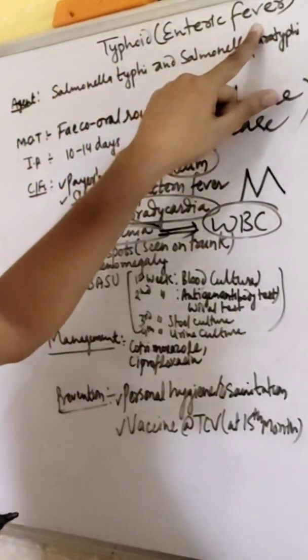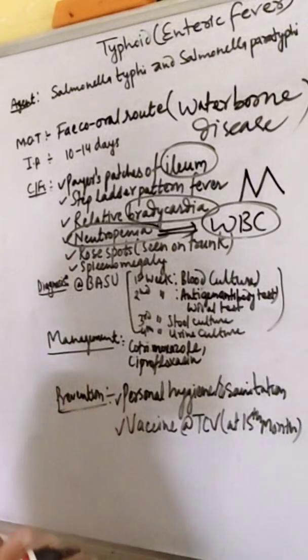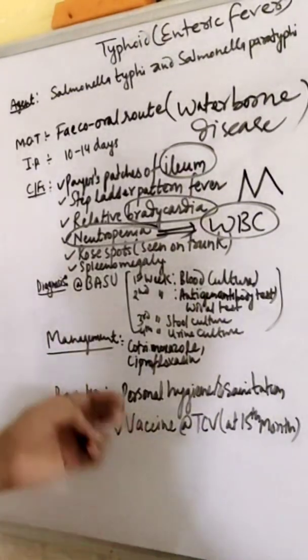Because it is a typhoid fever, the spleen will enlarge in the case of typhoid.